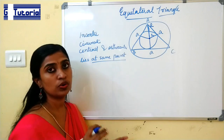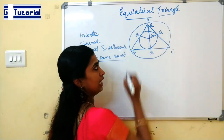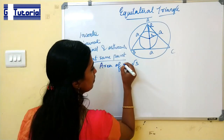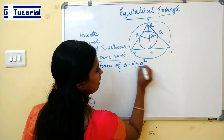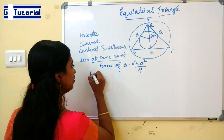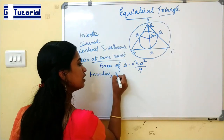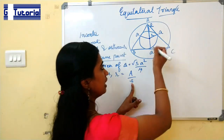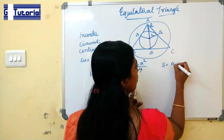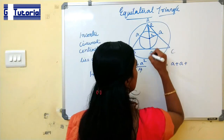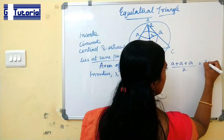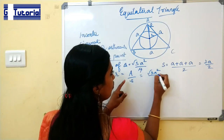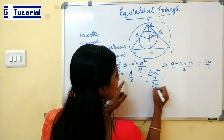An equilateral triangle has all sides equal. Let each side be a. The area of an equilateral triangle is given by (√3 × a²) / 4. We know that inradius r equals area divided by semi-perimeter. The semi-perimeter in this case equals (a + a + a) / 2 = 3a / 2. So inradius r equals (√3 × a² / 4) divided by (3a / 2).